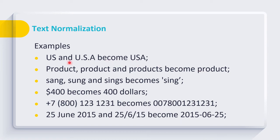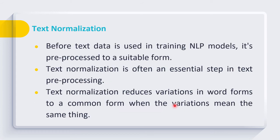During text normalization, we convert all these forms to a uniform form. Similarly, the words sang, sung, and sings all represent the same information about the word sing. During text normalization, these different forms of verbs are converted to their root form, sing. We can also write the same phone number in multiple ways; during normalization, these phone numbers will be converted into a uniform structure. The same applies to different currencies and date formats — we reduce the variations to a common form when the variations mean the same thing.